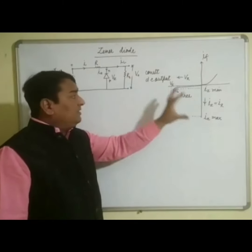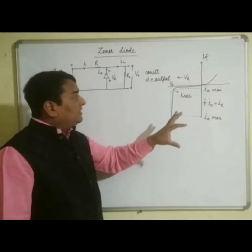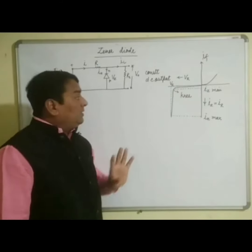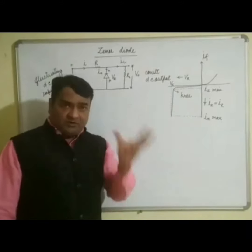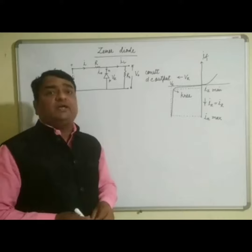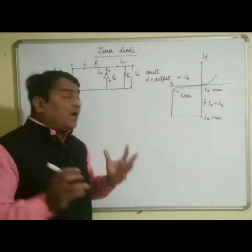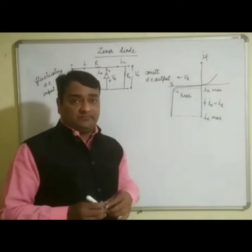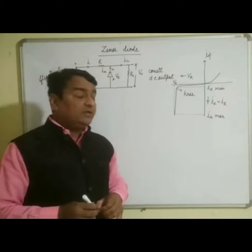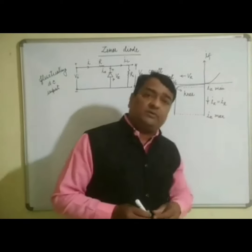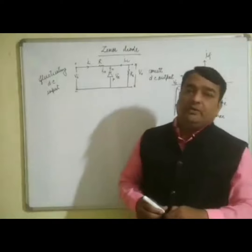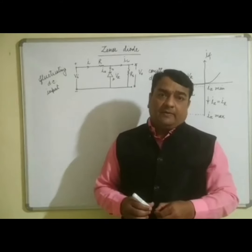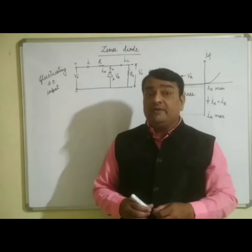In this region of reverse bias characteristic curve, the voltage across the PN junction diode remains almost constant for a large range of currents. This is why this diode may be used to stabilize voltage at a predetermined value.